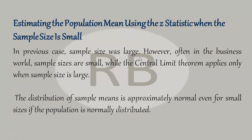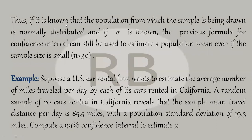In the previous case, when the sample size was large, we used z-statistics. But it is not always possible to take a large sample — sometimes we take small samples of 10 or 15 people. In that case, the central limit theorem cannot be applied because CLT is only valid for large sample sizes. However, if the population is normally distributed, we can assume that even for small sample sizes the distribution of sample means will be approximately normal.